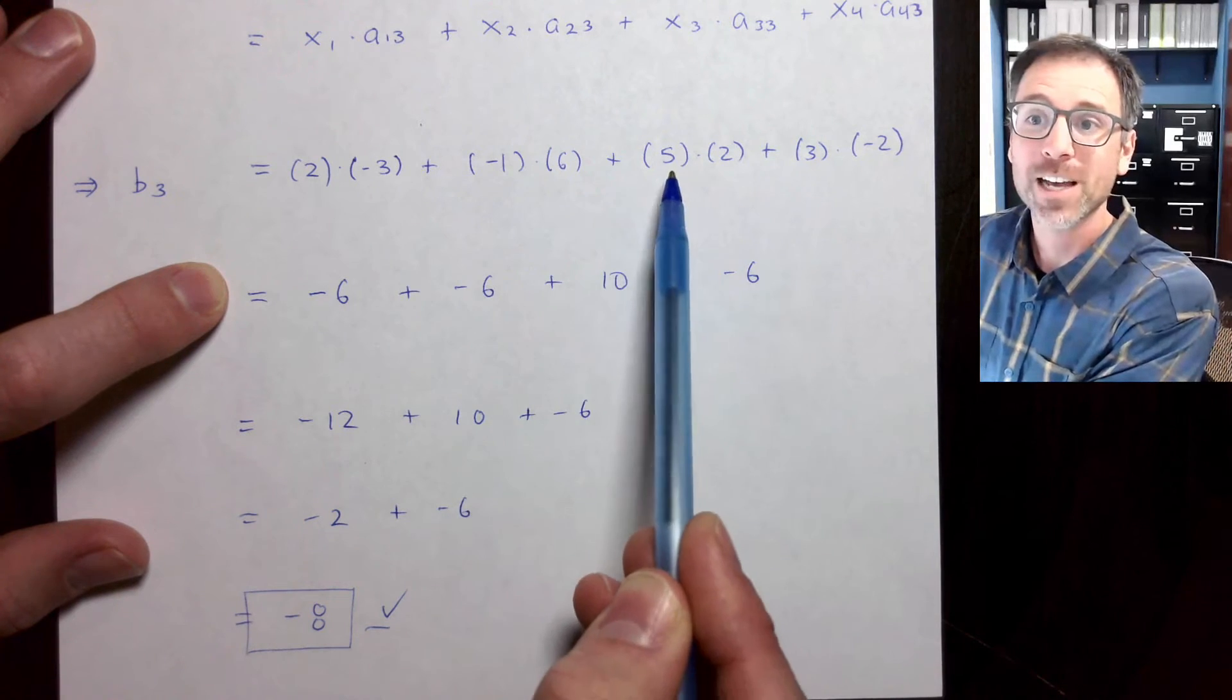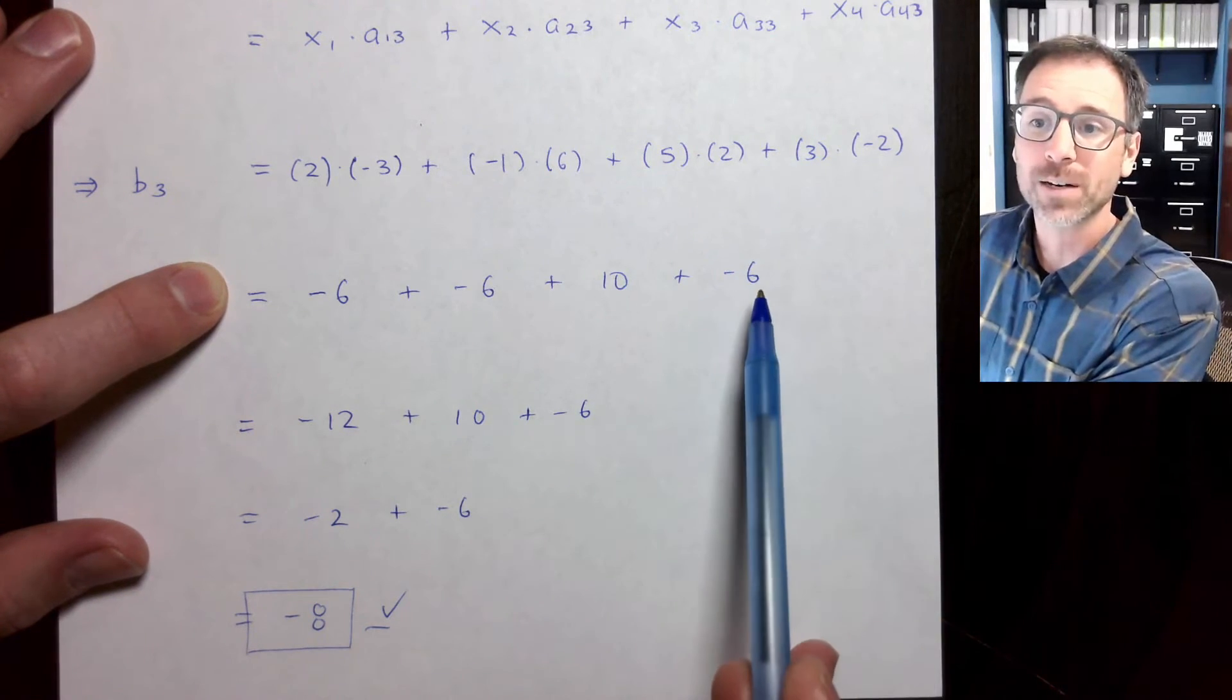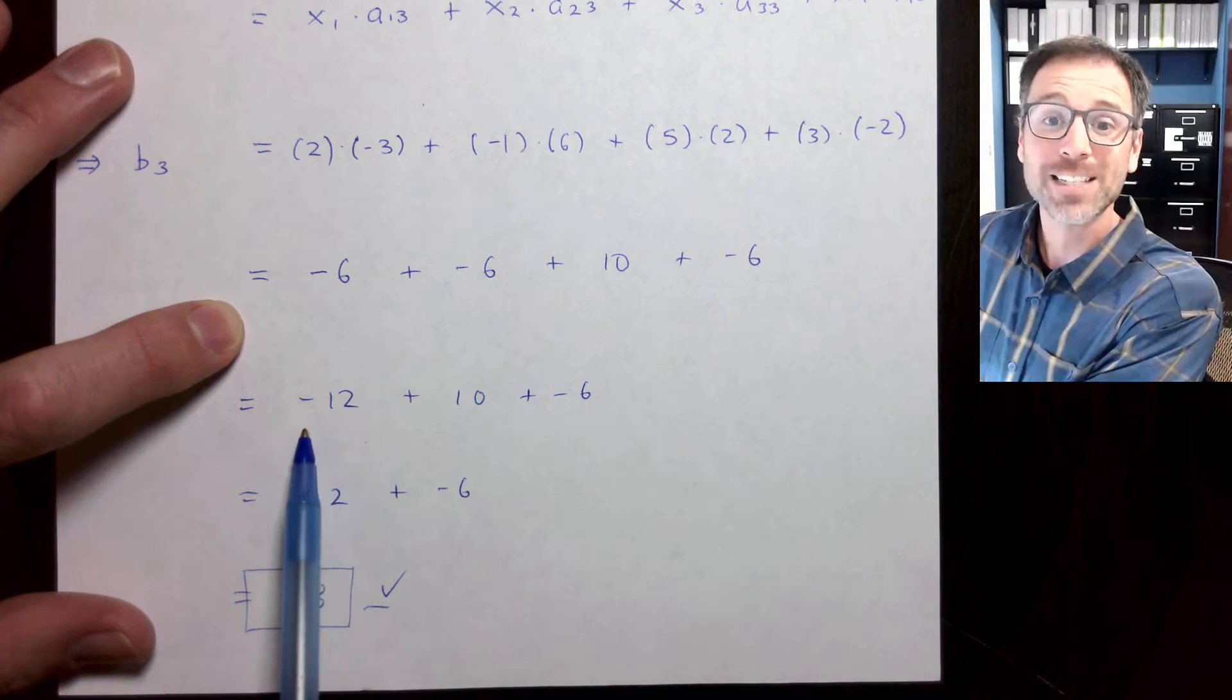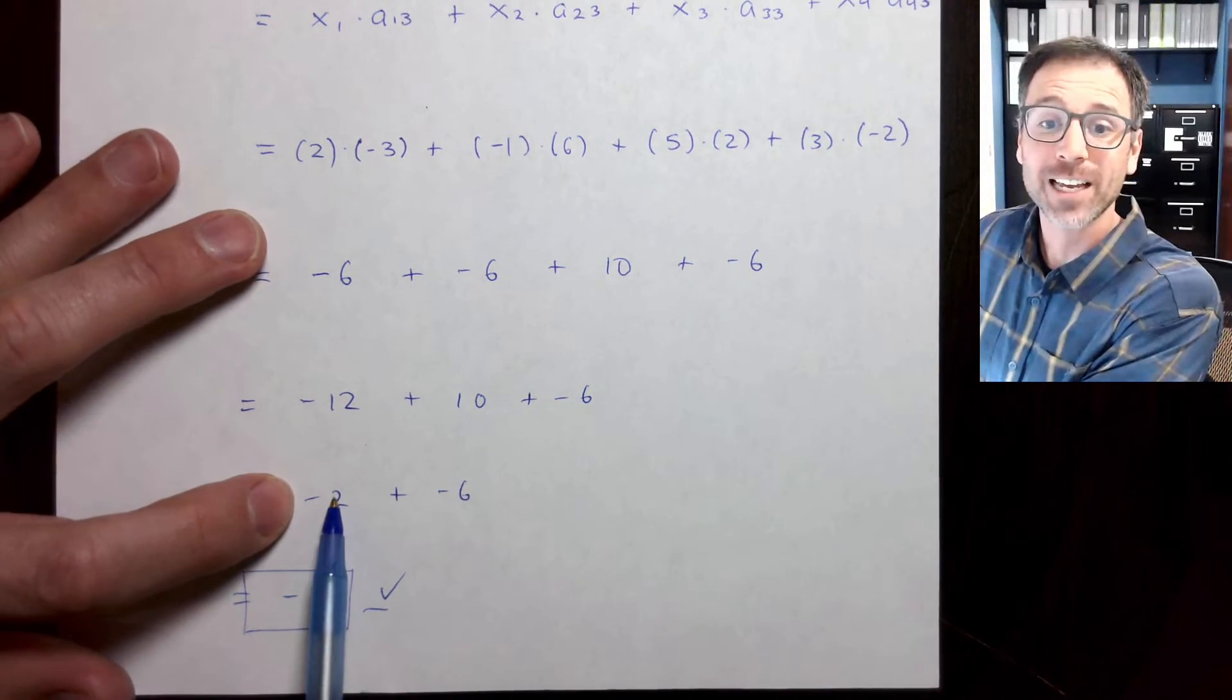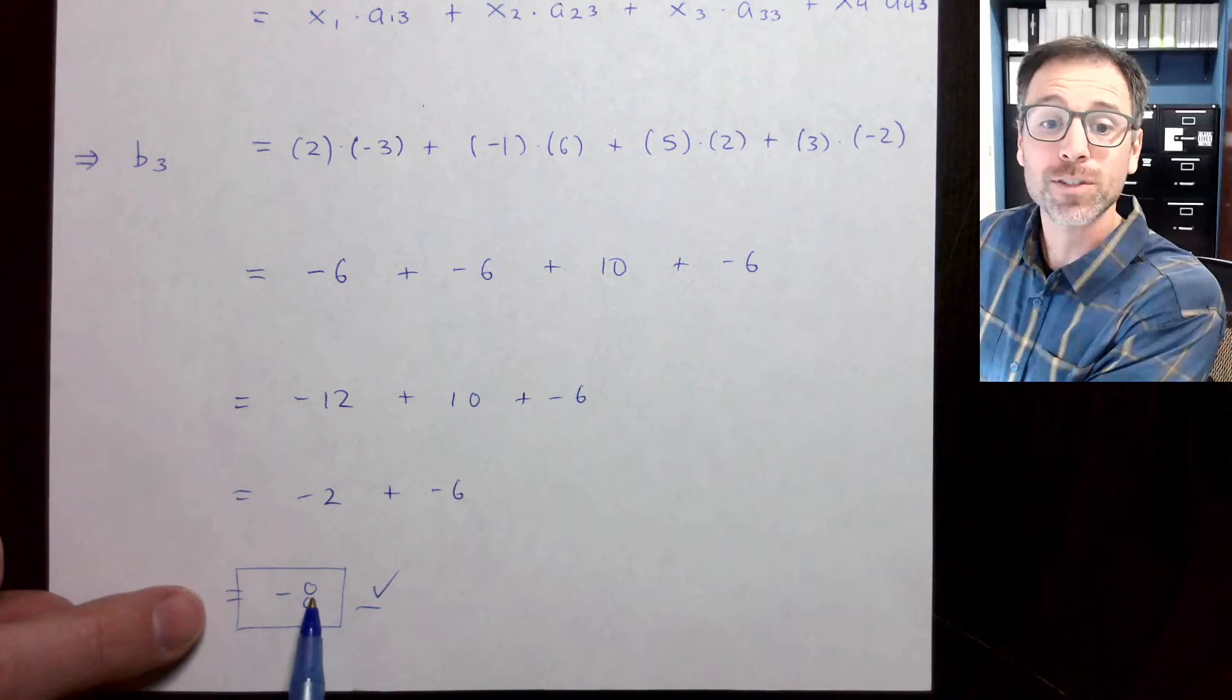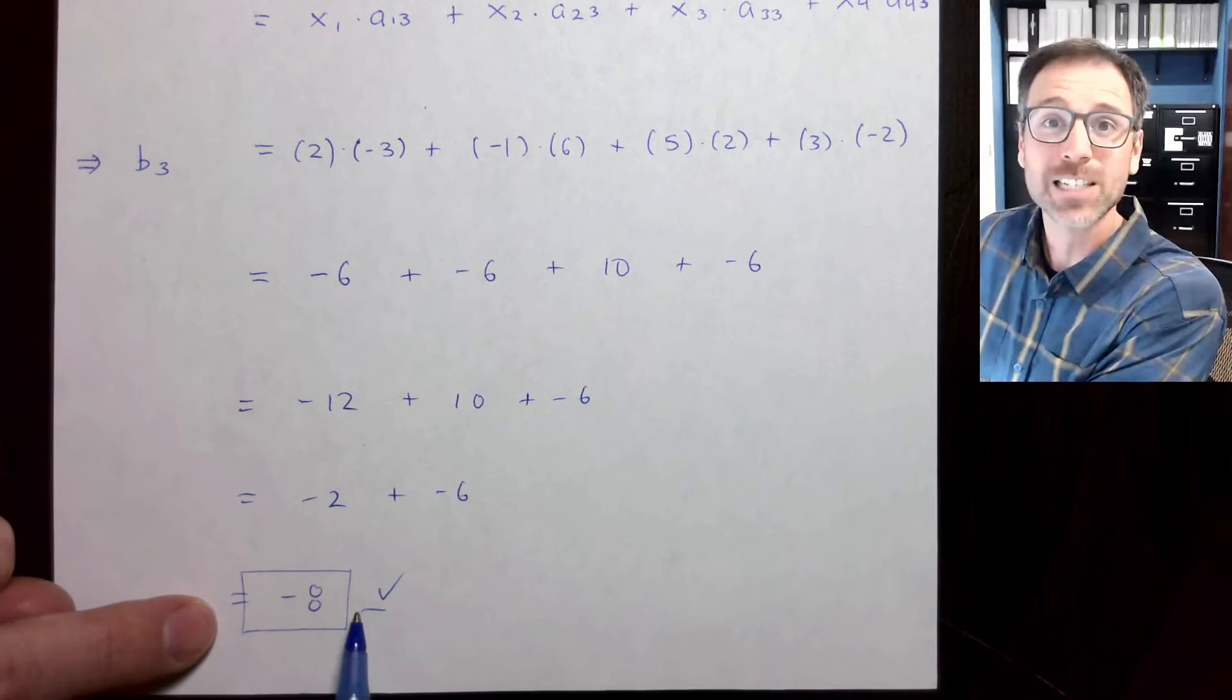We do each of those calculations individually. So 2 times negative 3 is negative 6, negative 1 times 6 is negative 6, 5 times 2 is 10, 3 times negative 2 is negative 6, negative 6 minus 6 is negative 12, negative 12 plus 10 is negative 2, negative 2 plus negative 6 is negative 8. So I have a guess for my third entry.